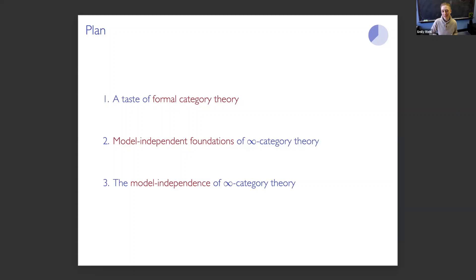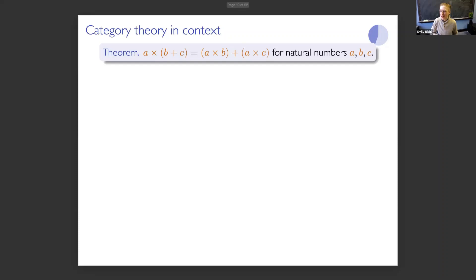So what is category theory all about? In one sense, category theory is about giving very general proofs about theorems concerning mathematical objects. Here's a theorem for natural numbers a, b, and c: a times (b plus c) equals a times b plus a times c — distributivity of multiplication over addition. There are many proofs of this, but I'm going to present a categorical one.